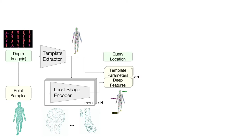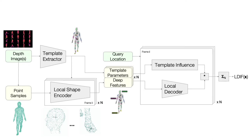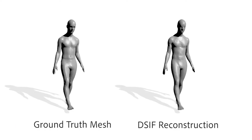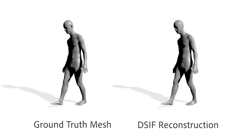To determine whether a query location X is inside or outside the predicted shape, we transform the query to each local frame. We evaluate the SIF parameters analytically and evaluate the latent codes using a reduced parameter version of the occupancy network's architecture. We combine the coarse template shape and the latent shape details to form the overall reconstruction. Our loss is based only on the final reconstruction quality. By evaluating queries on a regular grid and running marching cubes, we can extract a mesh.